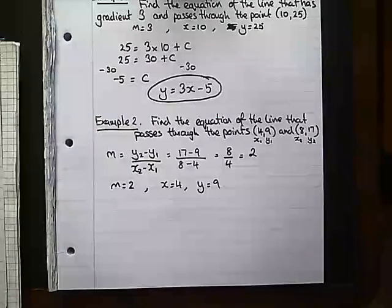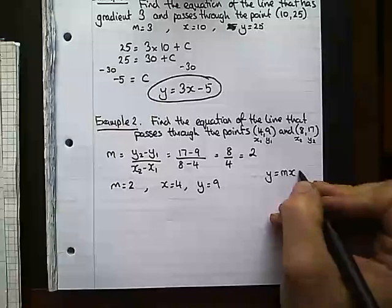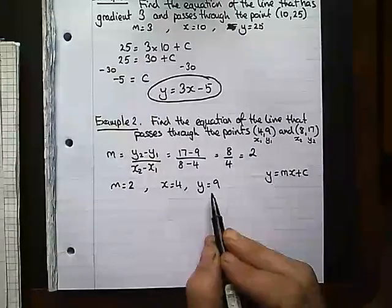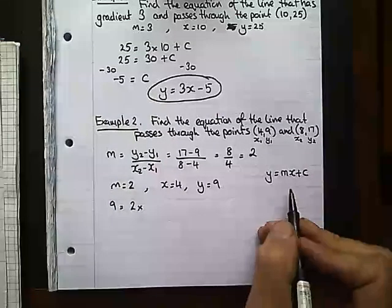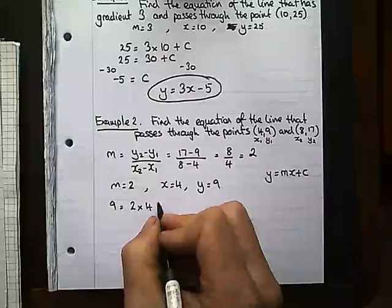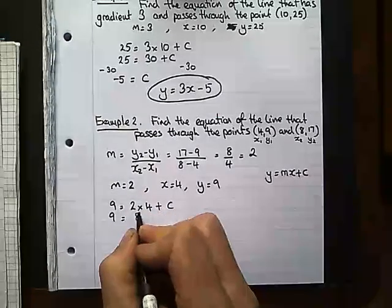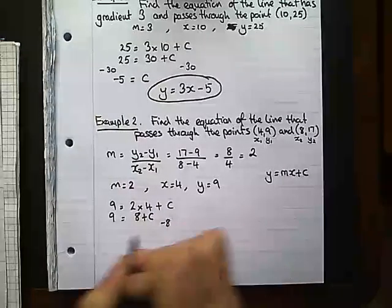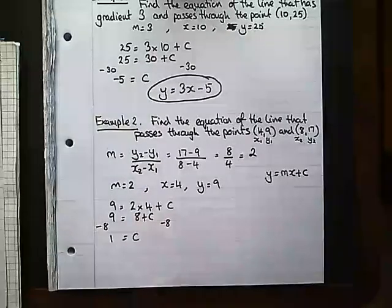Then I pop it into my general form of the equation y equals mx plus c and I'm trying to work out what c is. So y equals 9, m equals 2, 2 times my x value which is 4, and then I've got my plus c which is what I'm trying to work out. 2 times 4 is 8. To solve this and find out what c is I need to subtract 8 from both sides. 9 take away 8 is 1 and I'm left with c equals 1.